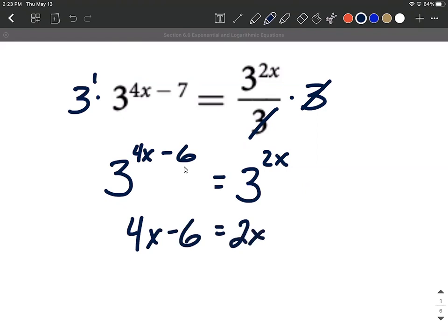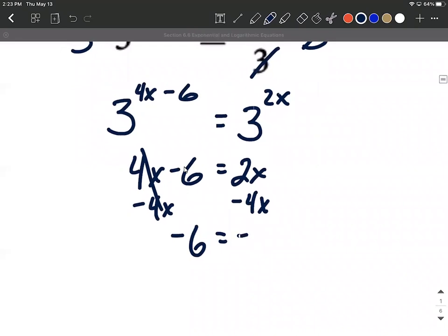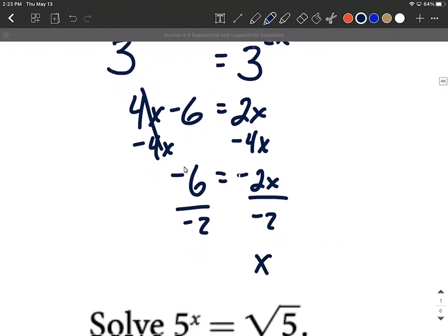Drop the bases now that we have 3 to a power on both sides. And solving this one down, I'm going to move the 4x to the other side by subtracting 4x. That'll put the variables on one side, constants on the other side. So negative 2x as we combine these together. To get x all by itself, we'll divide by negative 2. This will give us x equals positive 3. That's our only solution on this one.